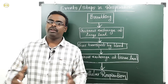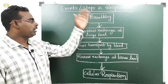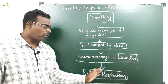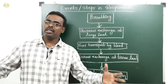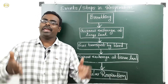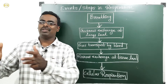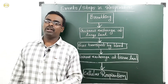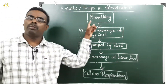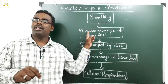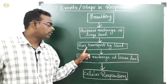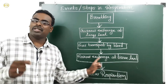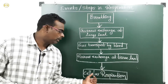Hello children, today we will discuss about the steps in respiration. For our convenience, we divided the respiration process into five steps for easy understanding. The five steps are: first, breathing; second, gaseous exchange at lungs level; third, gas transport by blood; fourth, gaseous exchange at tissue level; and fifth, cellular respiration.